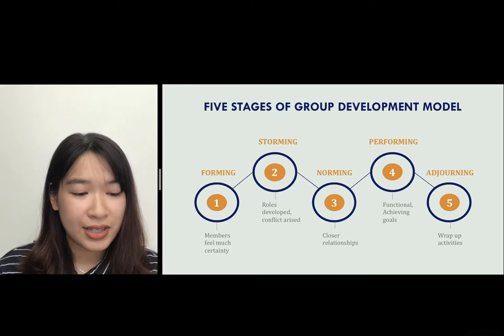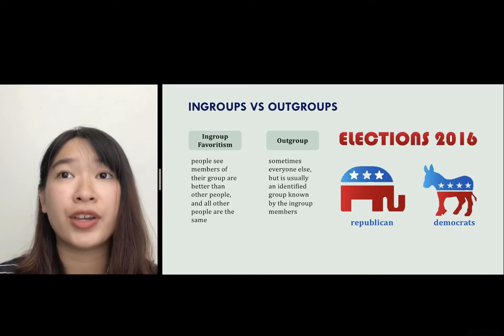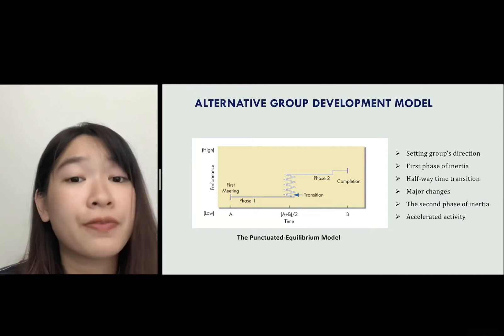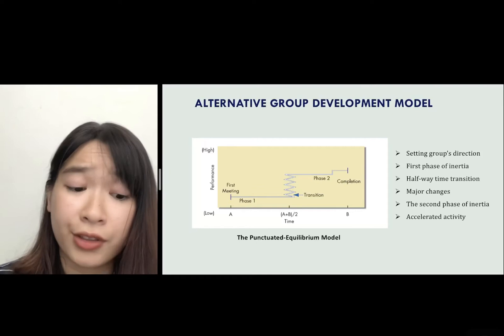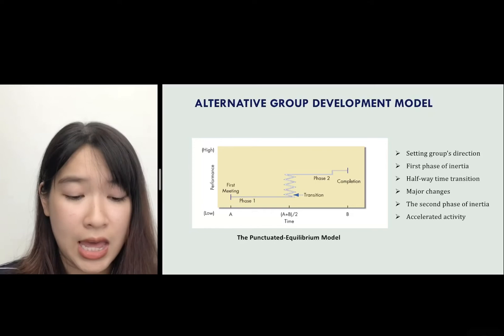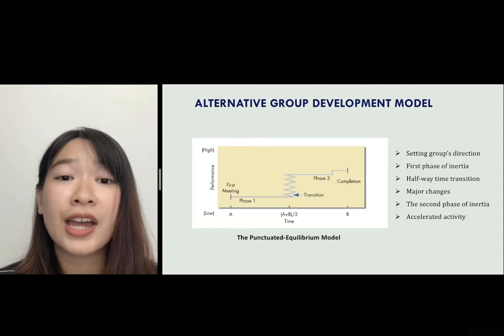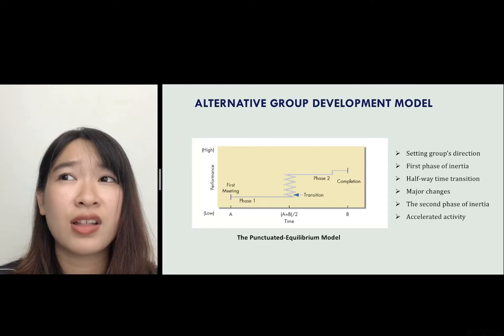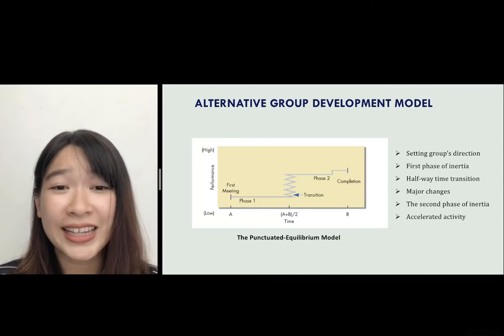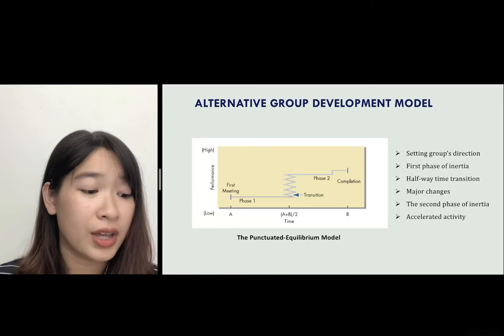The punctuated equilibrium model includes a unique sequence of actions: first, the group sets their direction; second, the first phase of inertia; third, a transition happens; fourth, the transition creates major changes in the group; fifth, the second phase of inertia; and finally, accelerated activities. In this model, the halfway point is when we can see a significant increase in group productivity.